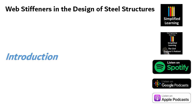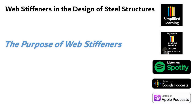Let's talk about the purpose of web stiffeners. Web stiffeners, also known as shear stiffeners, are elements that are attached to the web of a steel beam or girder to improve its resistance to shear forces. In steel structures, beams and girders often experience significant shear stress due to transfer of vertical loads from the floor system to the supporting column. Under heavy loads or heavy bending moment, the web of a beam can buckle or fail in shear. Web stiffeners are strategically placed along the length of the web to prevent buckling and enhance the overall stability of the member. By resisting shear deformation, web stiffeners contribute to the overall structural integrity and prevent sudden and catastrophic failures.